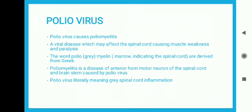Poliovirus causes poliomyelitis. This is a viral disease which may affect the spinal cord, causing muscle weakness and paralysis. The word 'polio' means grey and 'myelin' means marrow, indicating the spinal cord.